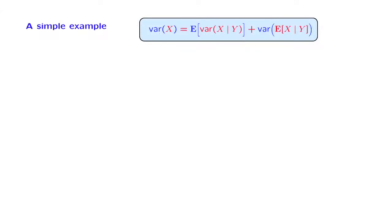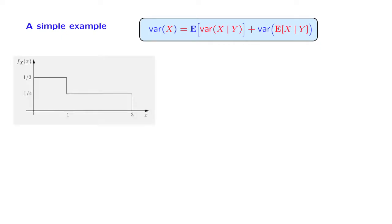We will now go through an example, which is essentially a drill to consolidate our understanding of the conditional expectation and the conditional variance. Consider a random variable X, which is continuous, and is described by a PDF of this form.